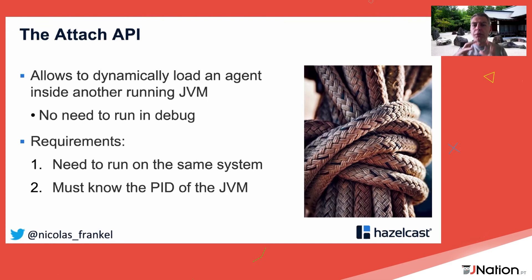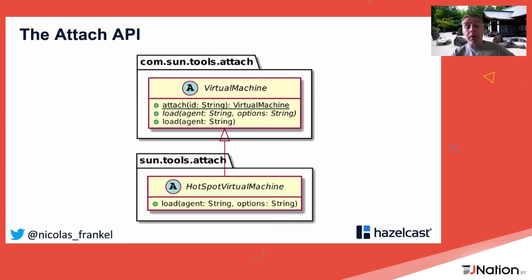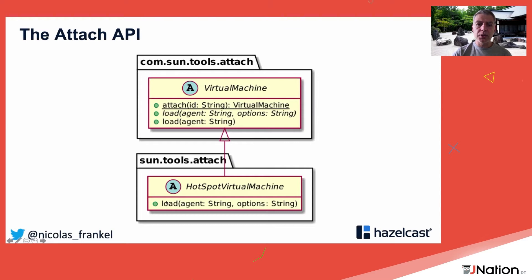There are two requirements for the Attach API: both JVMs must run on the same operating system, and the attaching JVM must know the PID of the production JVM. The API is simple — 'VirtualMachine.attach(pid)' returns a VirtualMachine instance, then you call 'loadAgent' passing the path to the agent jar plus any options.